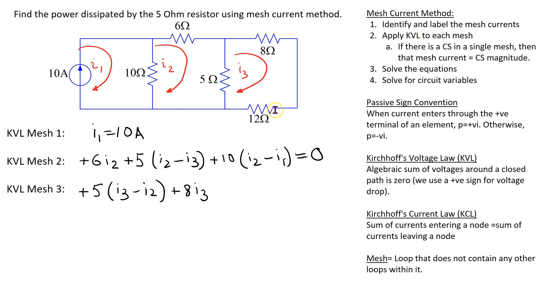And similarly, through the 12 ohm resistor, there is only I3 flowing. So, this is plus 12 I3 is equal to 0.